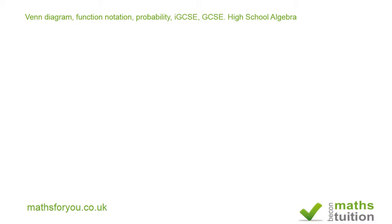Welcome to this exercise on Venn diagram function notation probability. It is a revision exercise based on an IGCSE past exam question. It says 90 students are asked which school clubs they attend, and this information is contained in a Venn diagram as shown here.